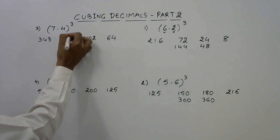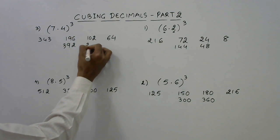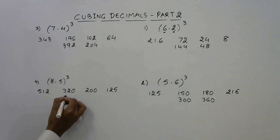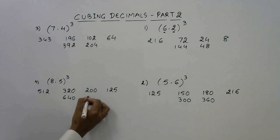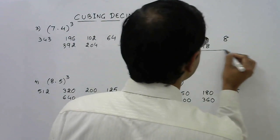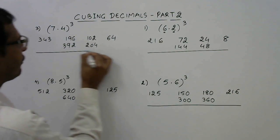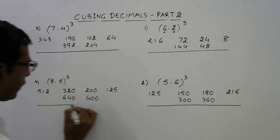196, 2 is 392. 112 double is 224. So after writing the double of the two middle terms just put a line like this and now we will write the final answer for all the four questions.